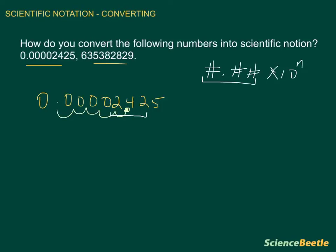We find that n in this particular number is going to be five. And since we went in a leftward direction, the number is going to be negative. So we write the base again: 2.42 times 10 to the fifth power, and since we went to the left the exponent is negative. So this would be the conversion for this particular problem.